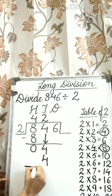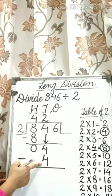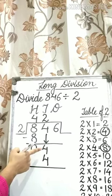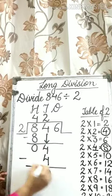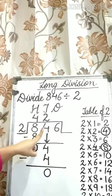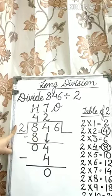Now we need to subtract 4 from 4. 4 minus 4 is equal to 0. Students, we have divided 4 tens by 2.